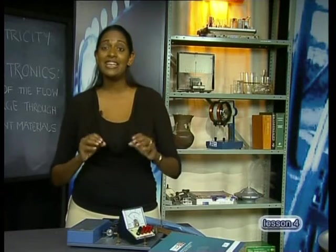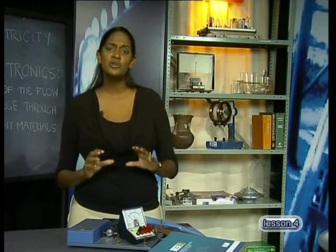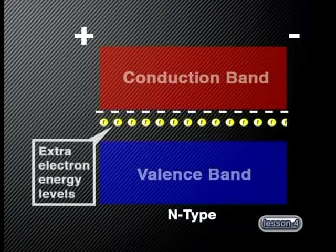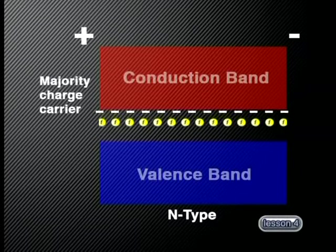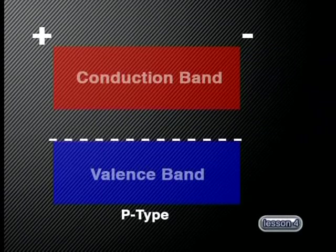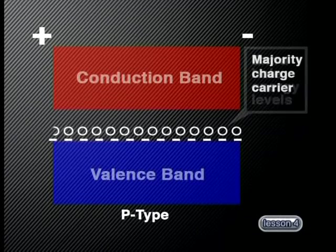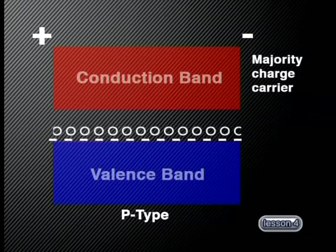For N and P-doped semiconductors, the energy gap is reduced even more. In N-type semiconductors, the extra electrons occupy an energy level just below the conduction band. And for P-type semiconductors, the holes occupy an energy level just above the valence band. As a result, doped semiconductors behave like conductors even at lower temperatures.